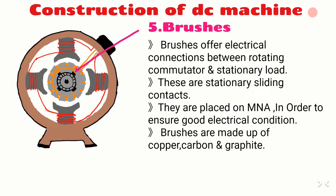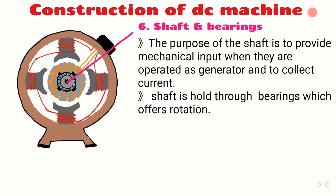The purpose of the shaft is to provide mechanical input when the machine operates as a generator, and to collect current and mechanical power when the same machine operates as a motor. The shaft is held through bearings which allow rotation. For large machines, roller bearings are used, and for small machines, ball bearings are used.